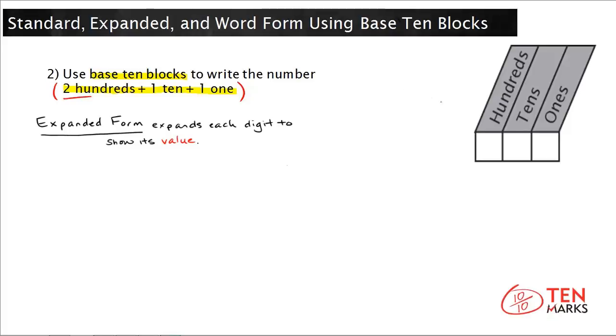If you have two hundreds, that means the digit in the hundreds place is two. One ten means you put a one in the tens place. And one one means you have a one in the ones column. This number is two hundred eleven. Now let's see how we would write this with base 10 blocks.